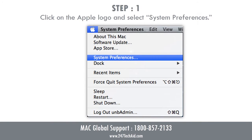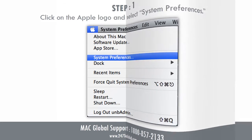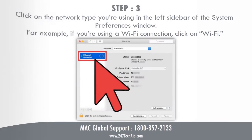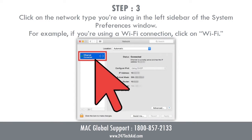Step 1: Click on the Apple logo and select System Preferences. Step 2: Click on the network icon. Step 3: Click on the network type you're using in the left sidebar of the System Preferences window.